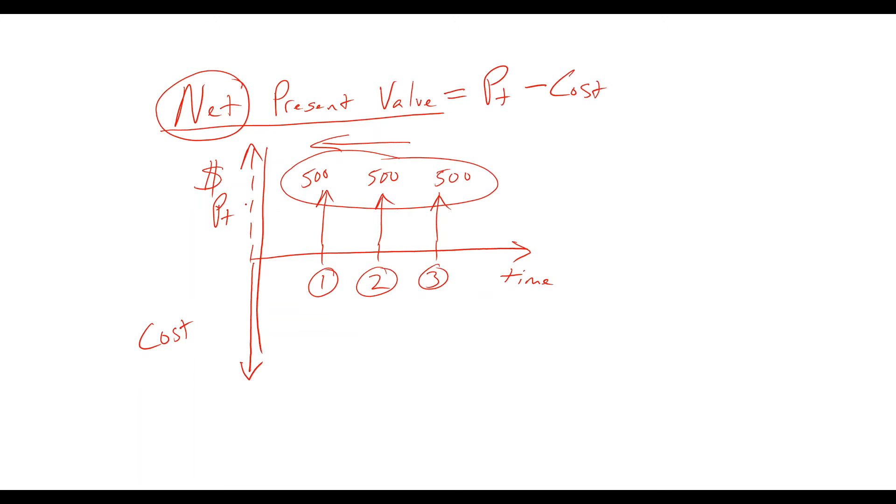That would be this dashed line here. We're going to compare that against the cost, and hopefully we want projects that have a positive net present value. If a project has a negative net present value, that means doing the project is equivalent to losing money, which isn't going to be very popular.